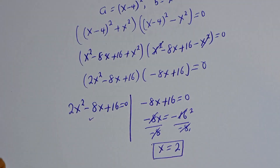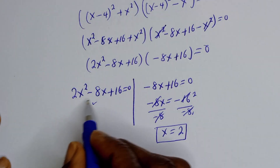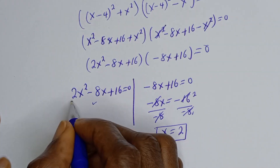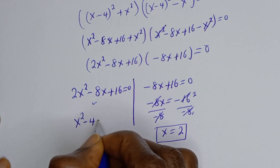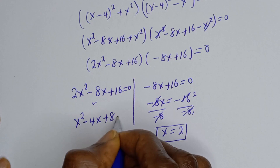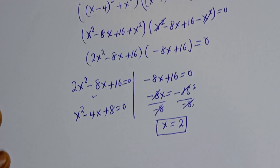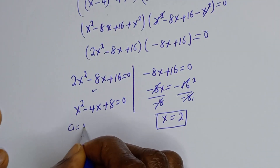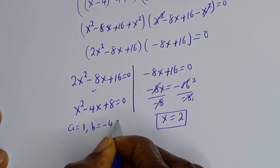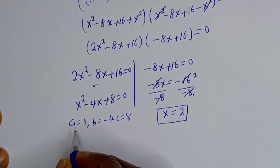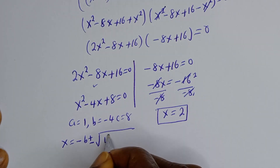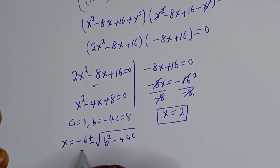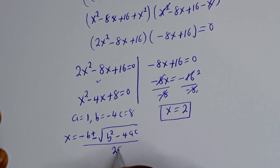Now from the first case, this is a quadratic equation. We can reduce this by dividing all terms by 2. We have S squared minus 4S plus 8 is equal to 0. Then a is equal to 1, b is equal to negative 4, c is equal to 8. The quadratic formula gives us S is equal to negative b plus or minus square root of b squared minus 4ac over 2a.